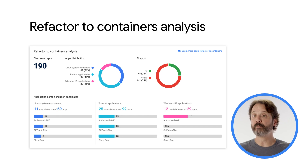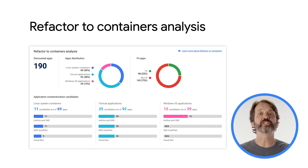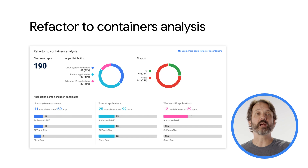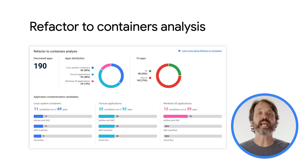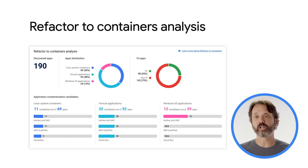Then, in the bottom section, you can see which target environments are applicable for the discovered applications once containerized. These target environments might be Anthos Clusters, GKE Standard Mode Clusters, GKE Autopilot Clusters, or Cloud Run.